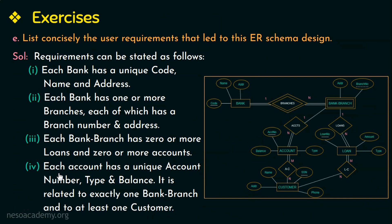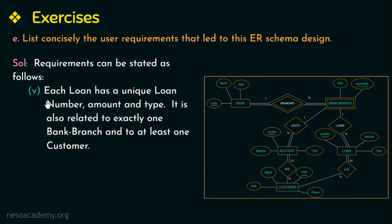The next requirement is: each account has a unique account number, type, and balance. It is related to exactly one bank branch — meaning one account can belong to at most one branch — and to at least one customer, meaning any account that exists belongs to a minimum of one customer.